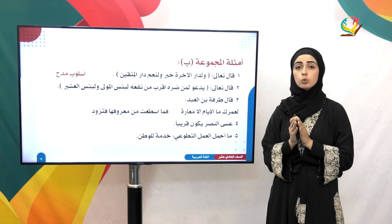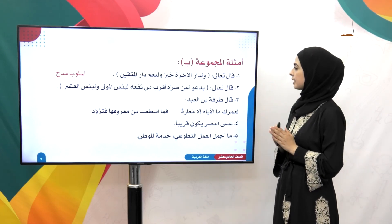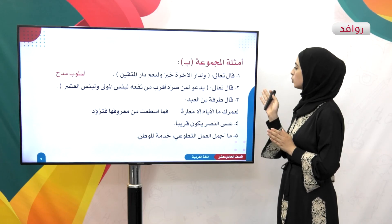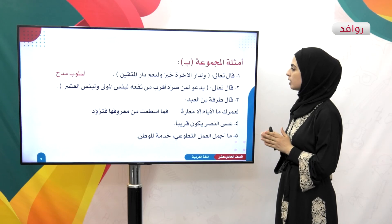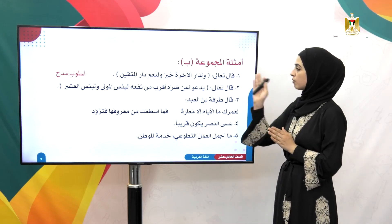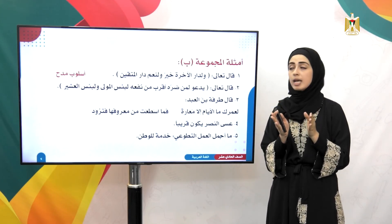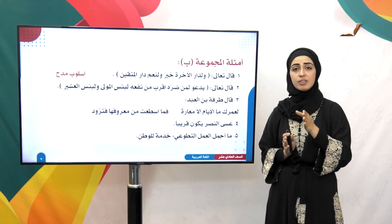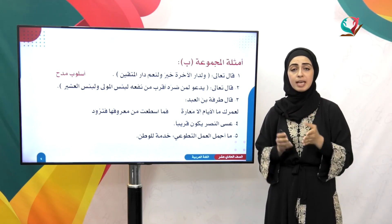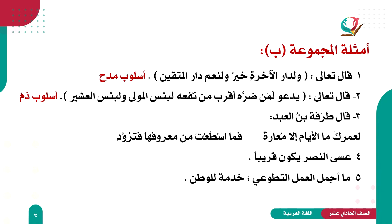المثال الثاني: قال تعالى: ﴿يَدْعُو لَمَن ضَرُّهُ أَقْرَبُ مِن نَّفْعِهِ لَبِئْسَ الْمَوْلَىٰ وَلَبِئْسَ الْعَشِيرُ﴾. في هذه الآية الكريمة «لبئس المولى ولبئس العشير» أسلوب ذم لا يستدعي مطلوباً، إذن هو إنشاء غير طلبي نوعه ذم.